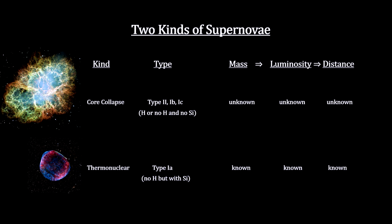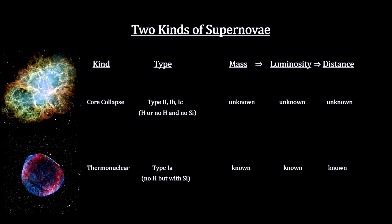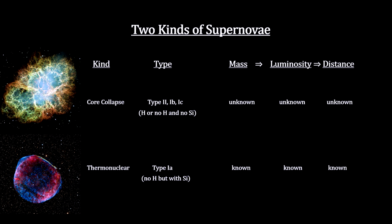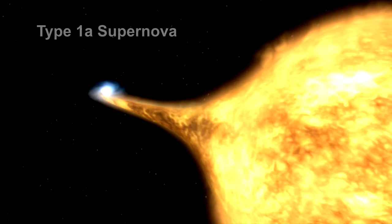It's called a Type Ia supernova. It is based on a particular binary star setup, and it is recognizable via light profiles and spectral analysis. Here's how it works.